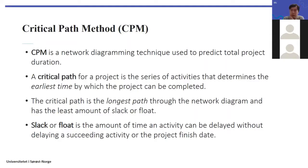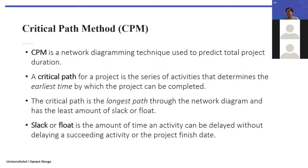Once you can visualize the activity sequences in a diagram, a common analysis is the critical path analysis. You use this to calculate the total project duration. The critical path is the series of activities that determines the earliest time by which the project can be completed. Because many activities can happen in parallel, there may be multiple paths — the critical path is the longest path through the network, and it has the least amount of slack or float.